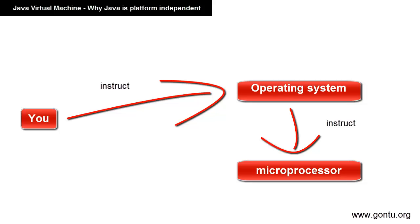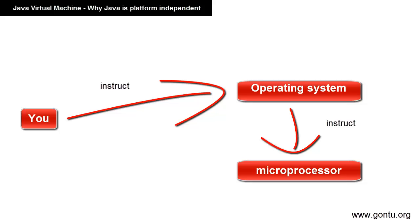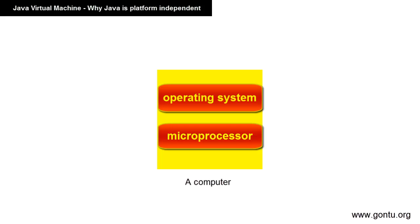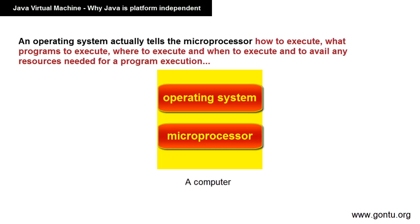For example, by clicking on some file on your computer you instruct your operating system to open that file because you want to read its contents, and then your operating system in turn instructs the microprocessor to run the program which can open that file. So all computers have a program installed called an operating system. The operating system tells the microprocessor how to execute, what to execute, where to execute, and helps avail any resources needed for the program execution like input from keyboard, displaying output, and many other tasks.